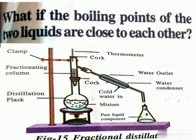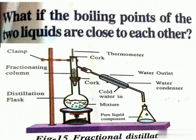If the boiling point difference is less than 25°C, we use the fractional distillation method. The apparatus is similar to that for simple distillation, except that a fractionating column is fitted between the distillation flask and the condenser. A simple fractionating column is a tube packed with glass beads.